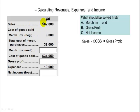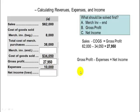Gross profit is simply sales minus the cost of goods sold to come up with gross profit. So let's do that one first — it's $27,950. The next one that should be solved is net income, because it's gross profit minus expenses equals net income. So that comes out to $17,950.